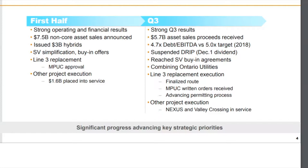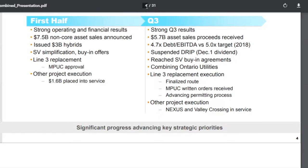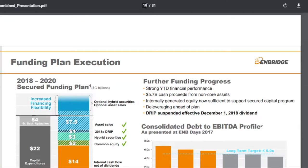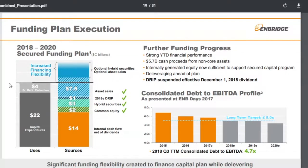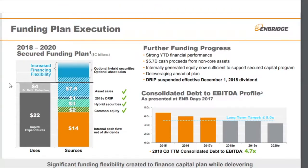The first reason why they suspended their dividend reinvestment plan is that management is confident they no longer need this as an equity funding source. We're in the Q3 investor presentation, and if we jump to slide 19, they detail and provide an update on their funding plan execution. You can see their $26 billion capital plan, mostly to fund growth projects.